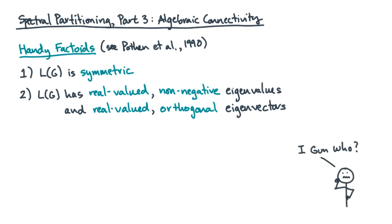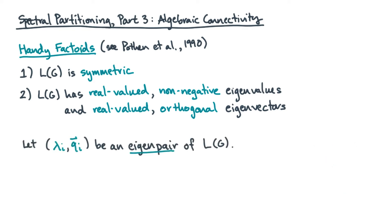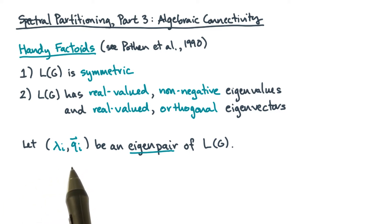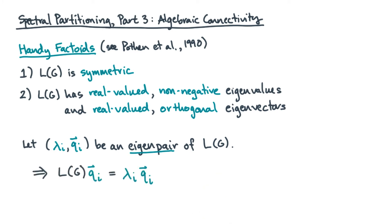If you've forgotten what an eigenvalue and an eigenvector are, here's a quick reminder. Eigenvalues and eigenvectors are paired. Let lambda_i and q_i be an eigenvalue and an eigenvector, respectively, of L(g). Then the following holds: multiplying L(g) by its eigenvector gives you a scaled version of the eigenvector, where the scaling factor is the eigenvalue.